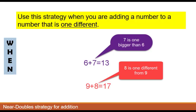First of all, when are you going to use this strategy? Use the near doubles strategy when you're adding a number to a number that's one different. For example, six and seven are one different, so we would use this strategy. Eight and nine being added together, you can use the near doubles strategy.